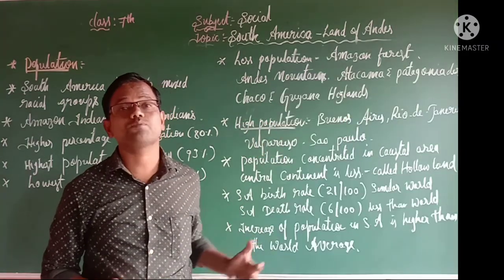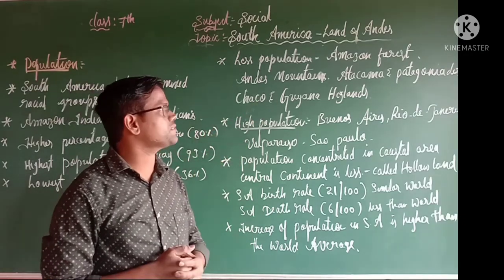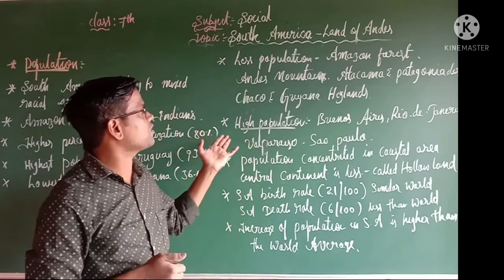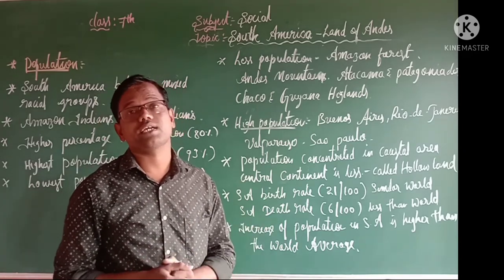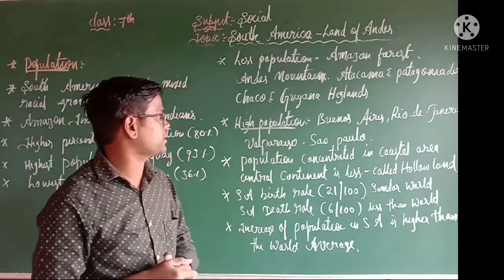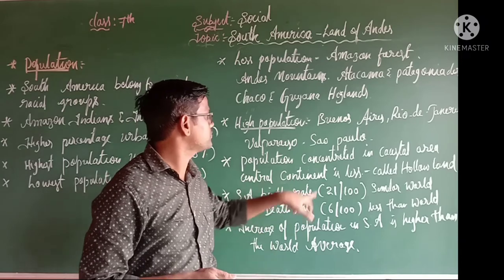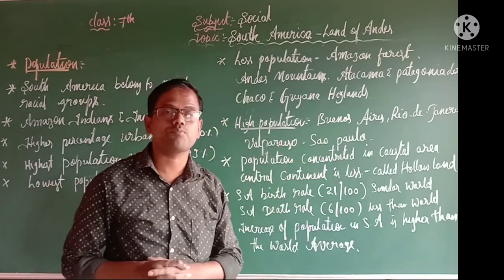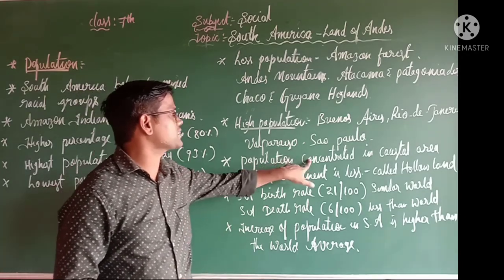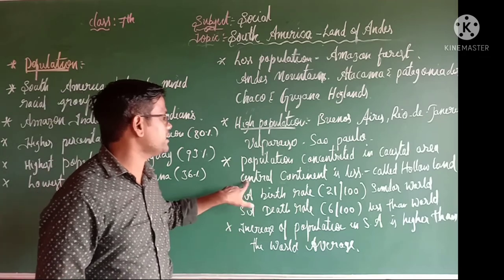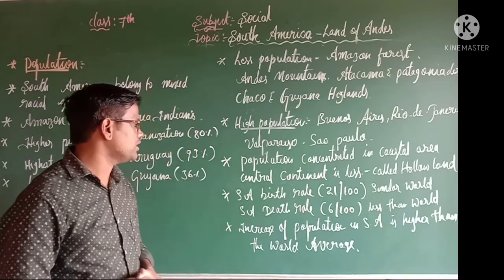Areas with less population in South America include the Amazon Forest, Andes Mountains, Atacama and Patagonia Deserts, Chaco, and Guyana highlands. Areas with high population include Buenos Aires, Rio de Janeiro, Valparaiso, and São Paulo. Most of South America's population is concentrated in coastal areas, while the central continent has less population and is called the 'empty land.'